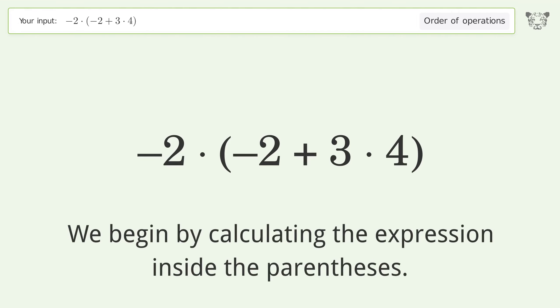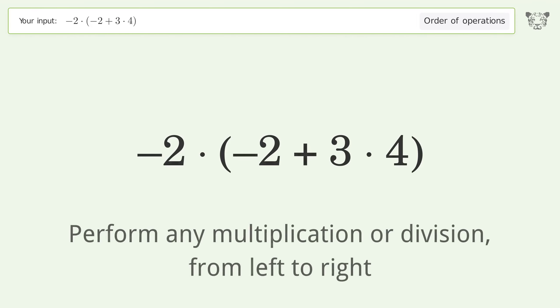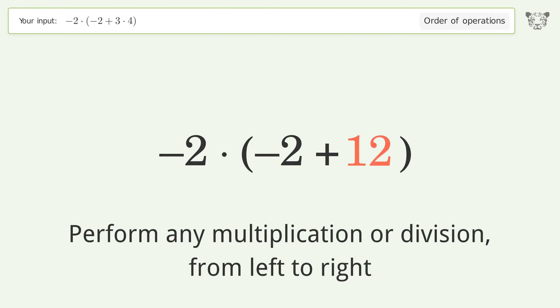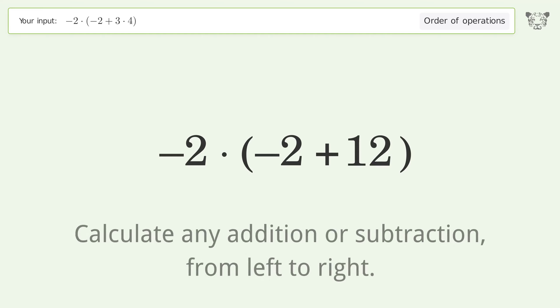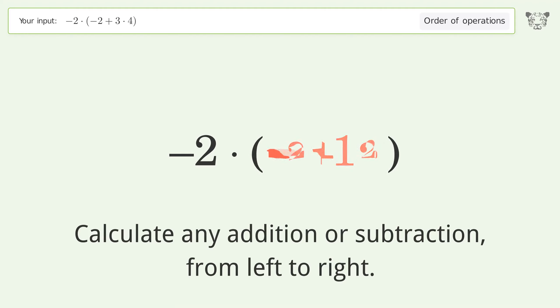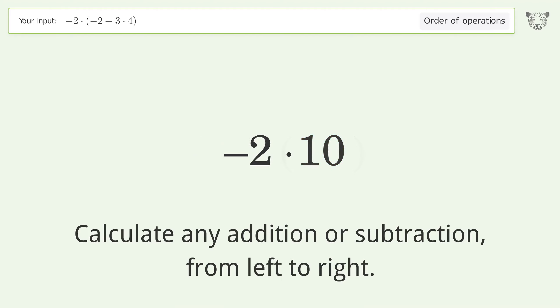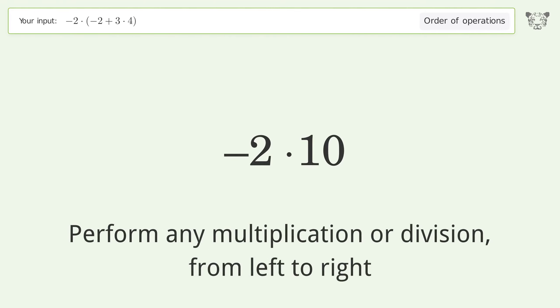We begin by calculating the expression inside the parentheses. Perform any multiplication or division from left to right: 3 times 4 equals 12. Then calculate any addition or subtraction from left to right: negative 2 plus 12 equals 10.